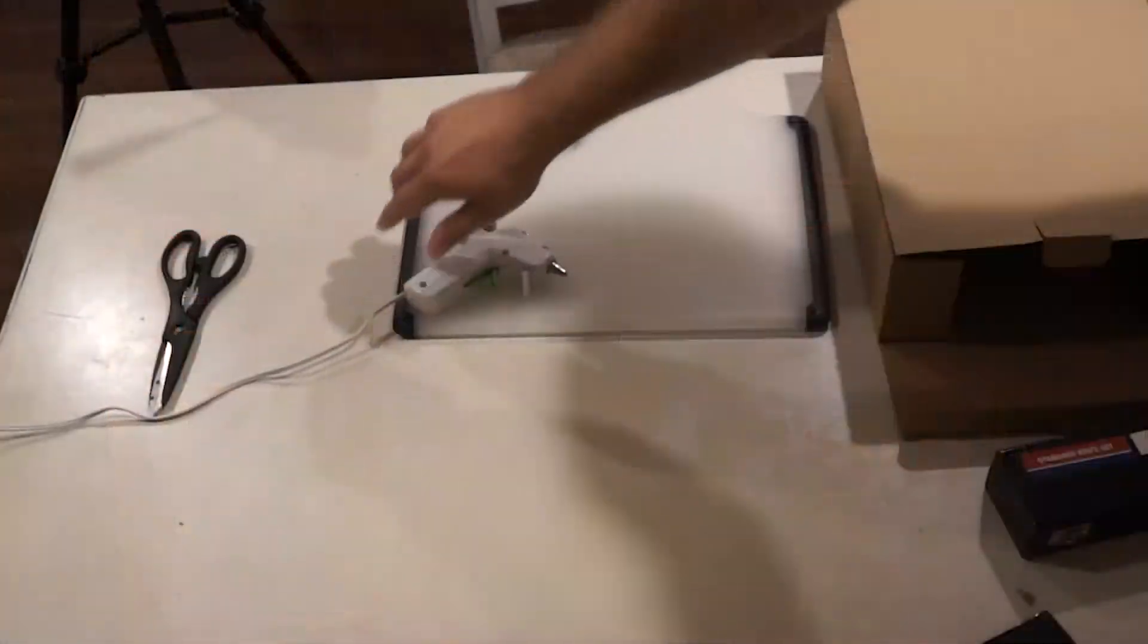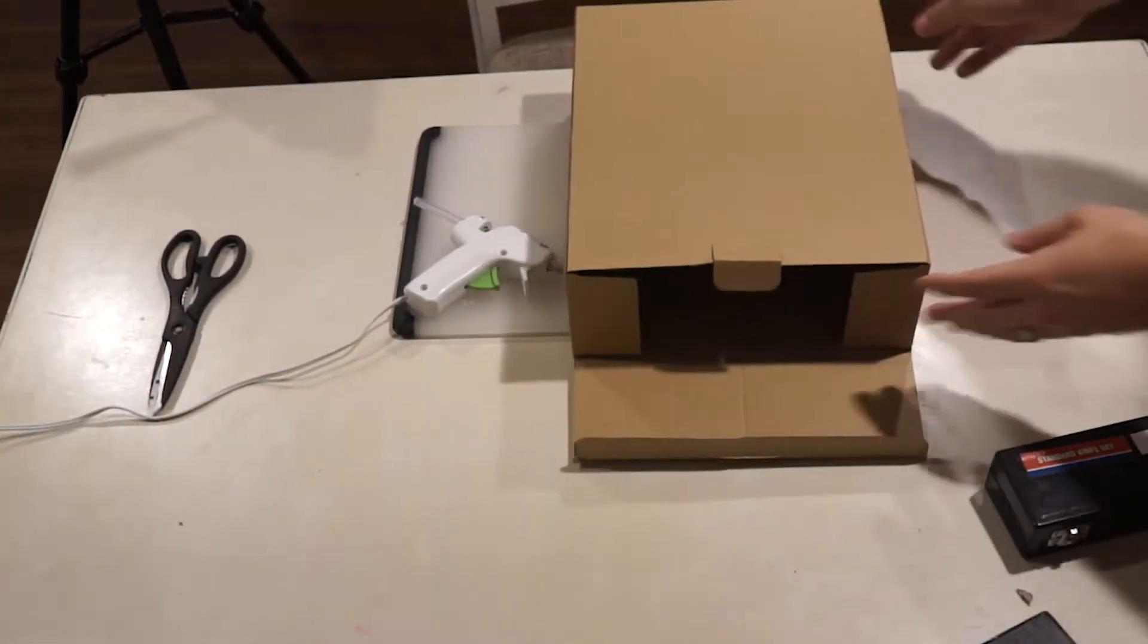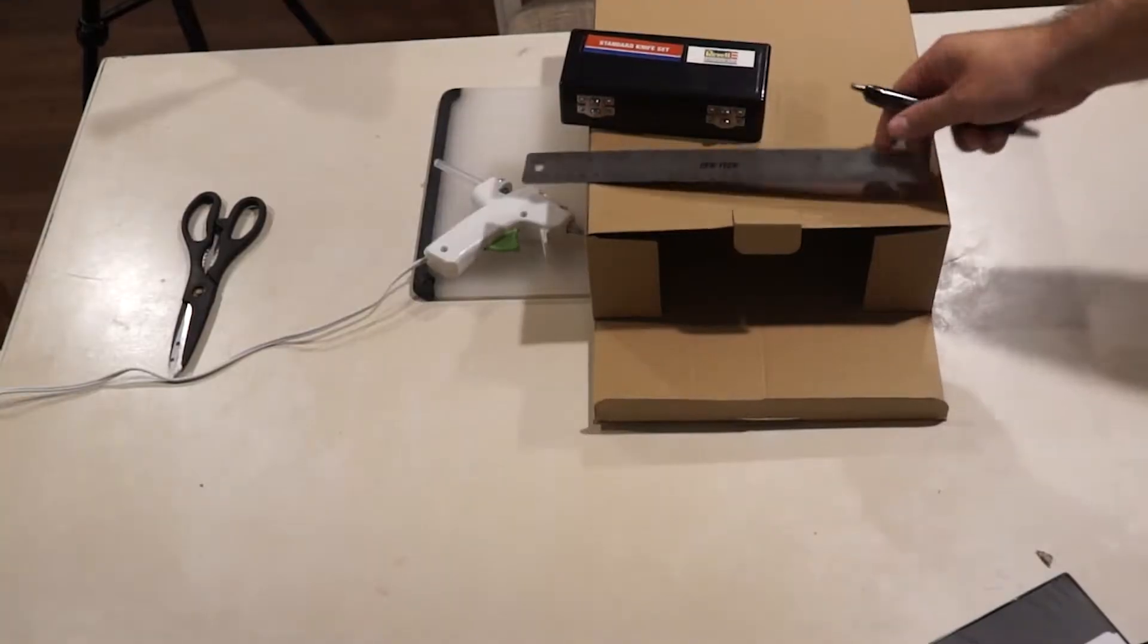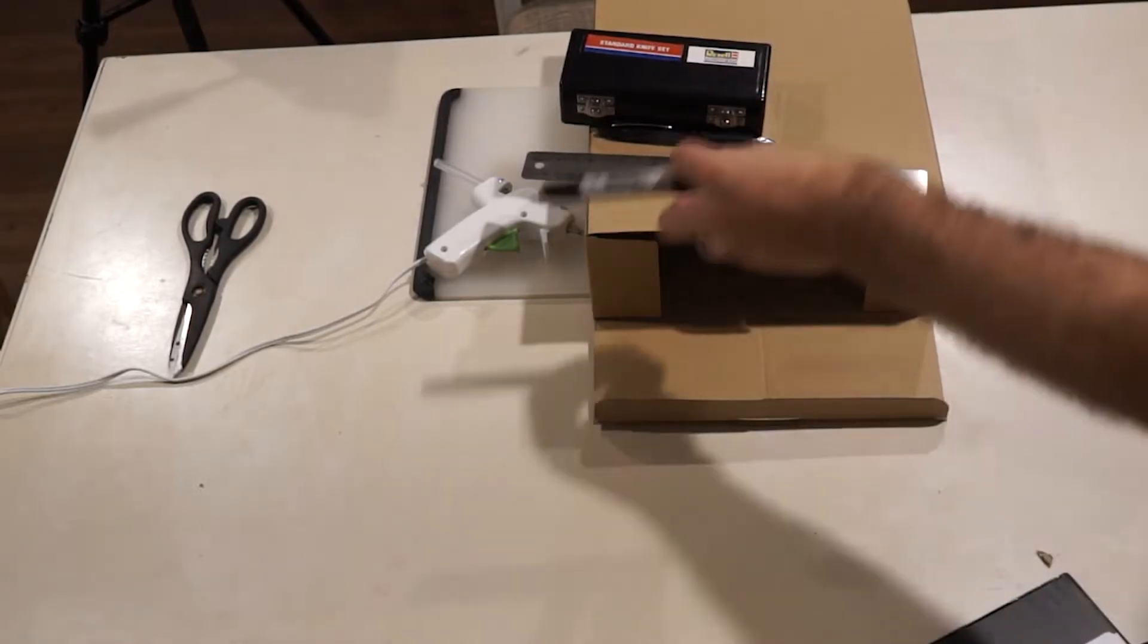If you do decide that you're going to do this you're going to need a few things. The first is a cardboard box, a knife, something to draw your outline of what you want your lamp to look like onto the box, and an LED strip.